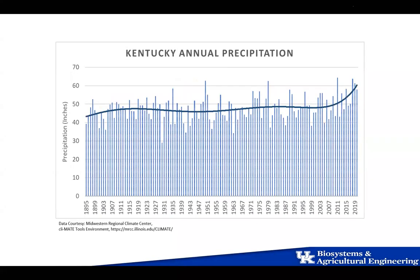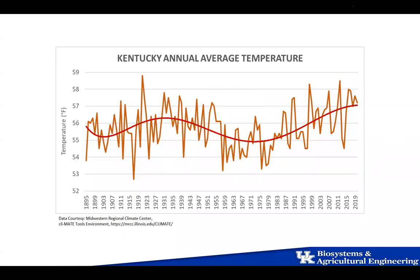Kentucky's annual precipitation for the past several years — that floating average — is increasing. We think either it'll keep on that upward trend, or alternatively, if it balances out and goes back to average, we'll experience severe drought conditions. We don't know which will happen, but if it continues on the current path, we have to plan for more challenging times to get our hay up. Kentucky annual temperature is also increasing overall, so we're dealing with a warmer, wetter climate.